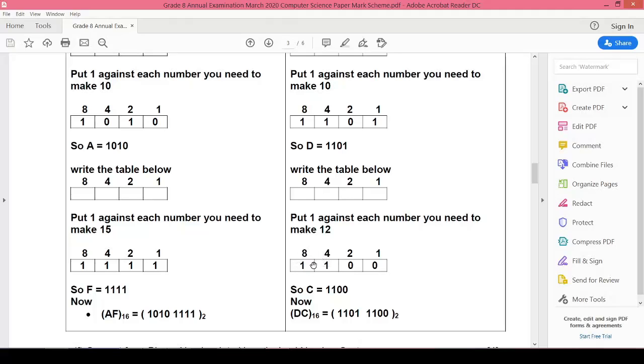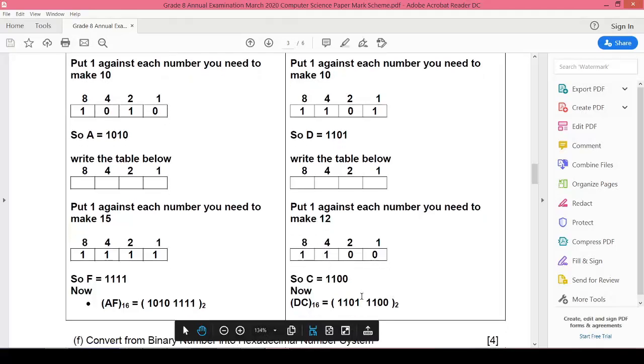Only 8 and 4 will make 12, and that is 1100. Now how you will write DC?